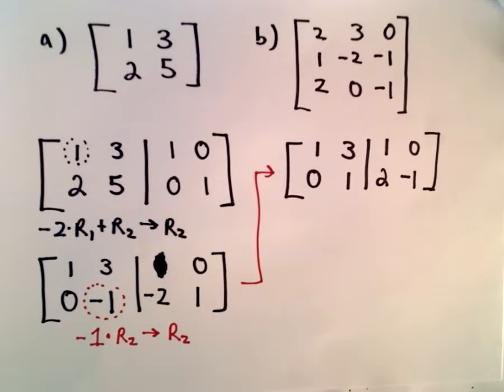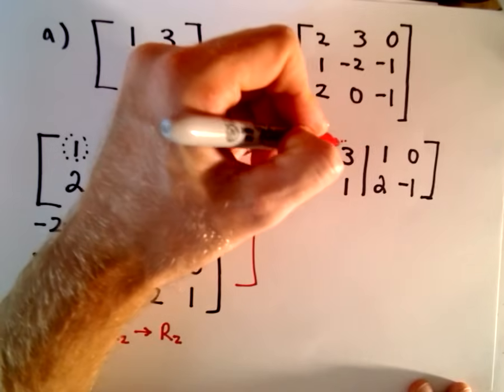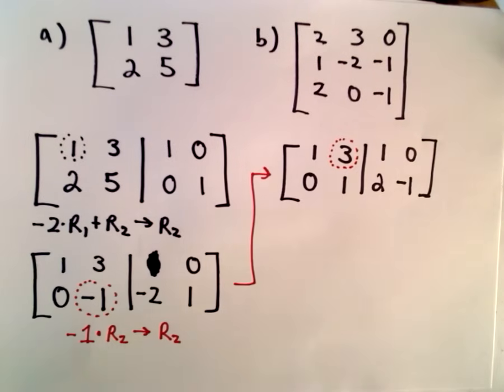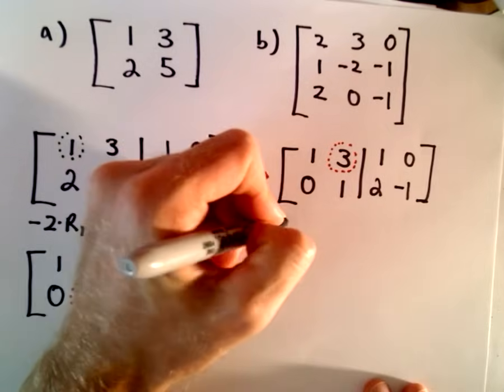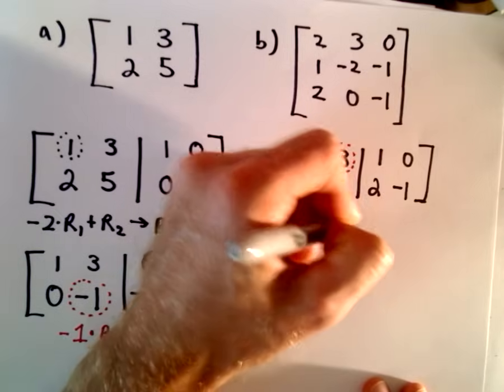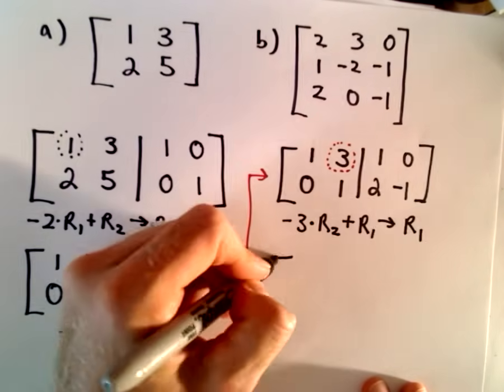Alright, so now all I want to do is I want to make this entry where we have a positive 3. I want that to be a 0. And then we'll have the identity matrix on the left side. So, I'm going to take negative 3, multiply that by row 2, add that to row 1 to give me my new row 1.